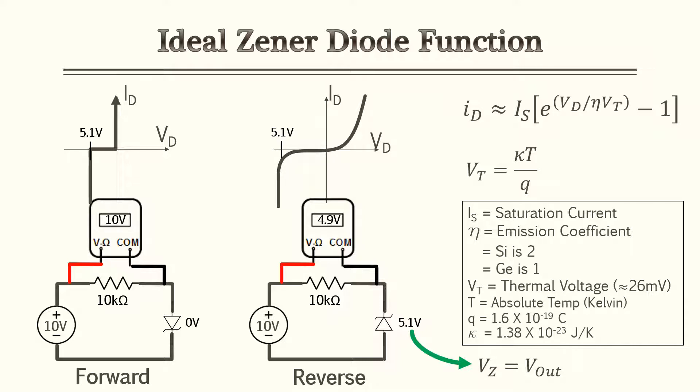If you look in your FE reference handbook you'll see the same equations for a junction diode as far as finding your thermal voltage, your current, and things like that. I'm not going to go over that as much because it forms and functions just like a junction diode.